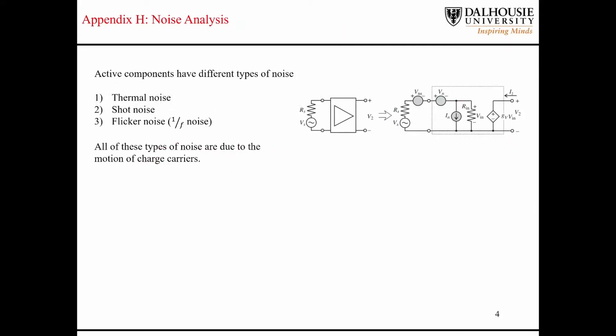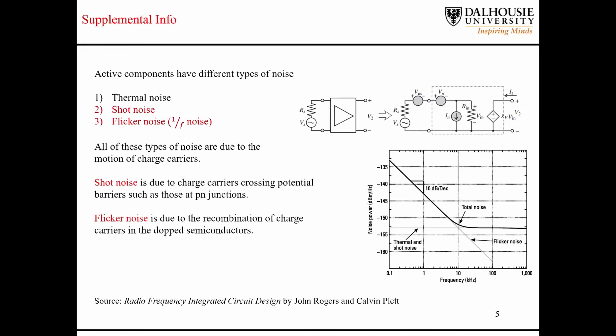Okay, so very quickly, I just wanted to mention a few different types of noise that are common in RF systems. So all of these different types of noise are due to the random motion of charge carriers. So that could be electrons, could be holes, depending on the doping of the semiconductor, like I mentioned.